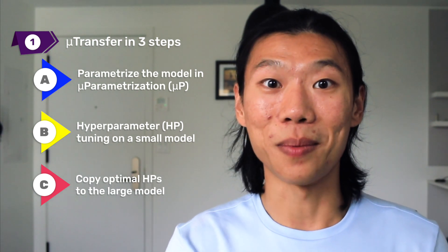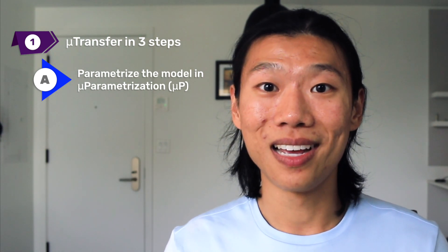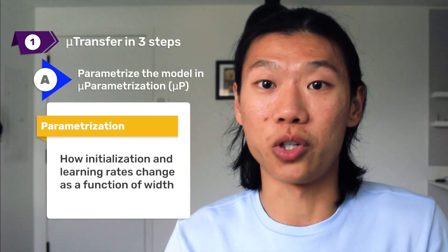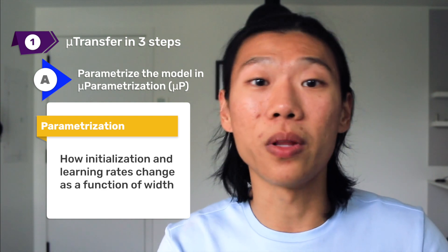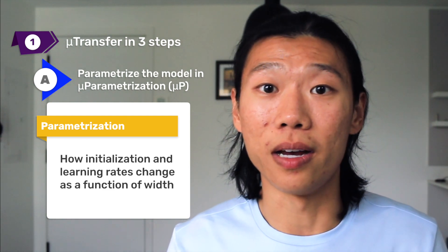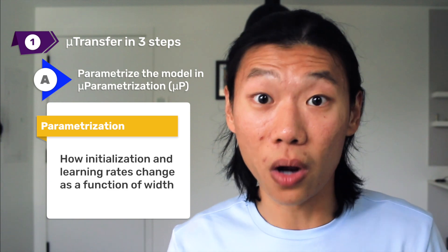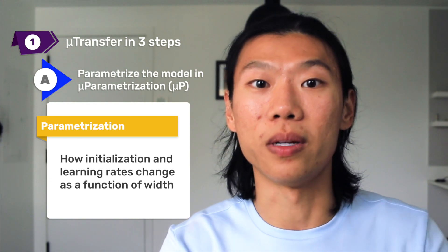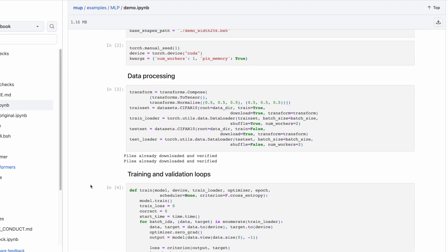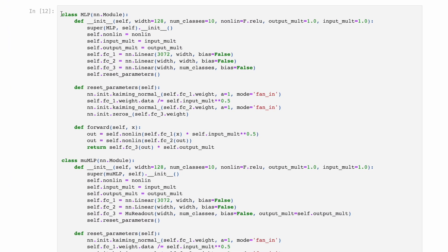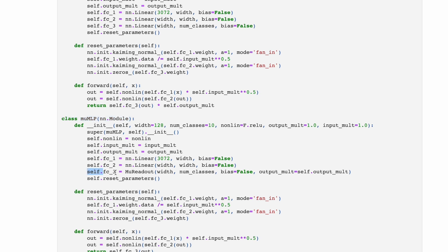Let's unpack the first step: parameterizing the model in MuP with an example. Parameterizations describe how we change the model initialization and learning rates as a function of width. For example, when we double the width, should we make the learning rate smaller by a factor of 2, smaller by a factor of square root of 2, or not at all? These choices for every parameter throughout the network determine the parameterization. In this Jupyter notebook, we have a multi-layer perceptron, one parameterized in PyTorch default and another in MuP. This one-line change parameterizes the model in MuP, and when used with the MuOptimizer, we completely change the hyperparameter stability of the model.